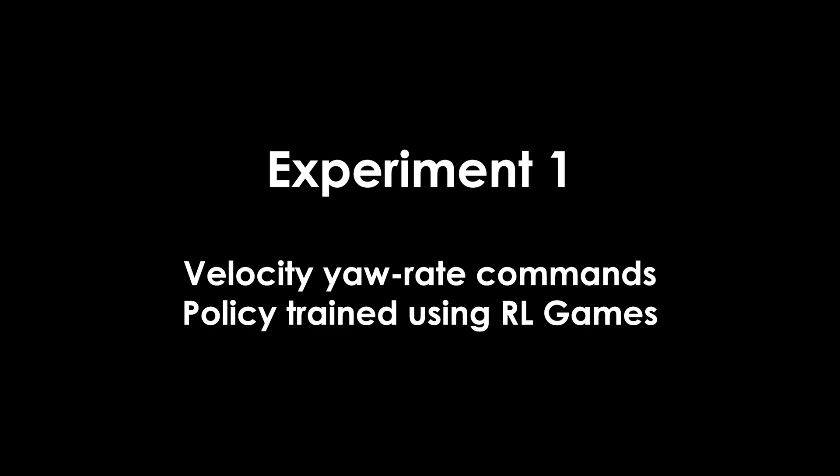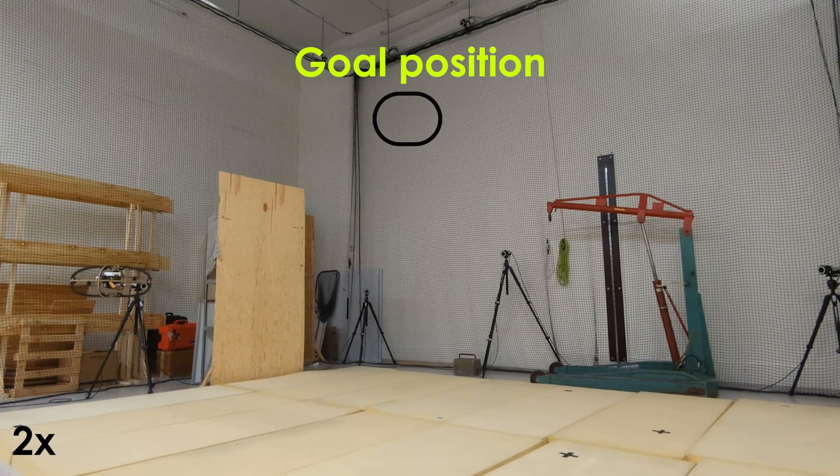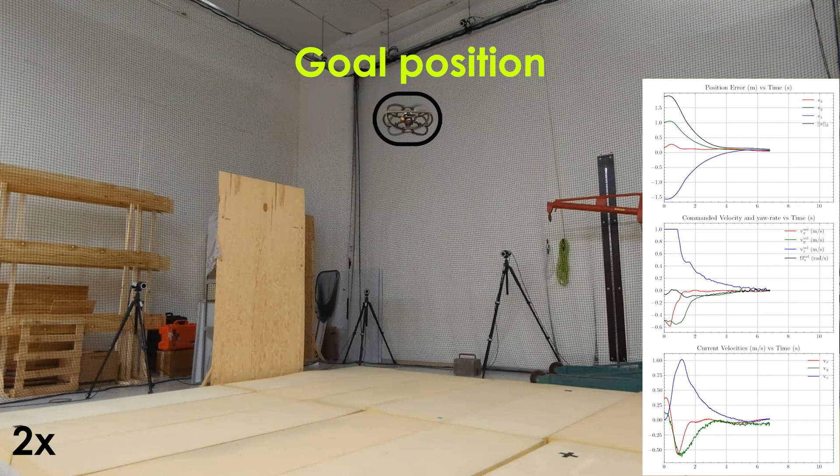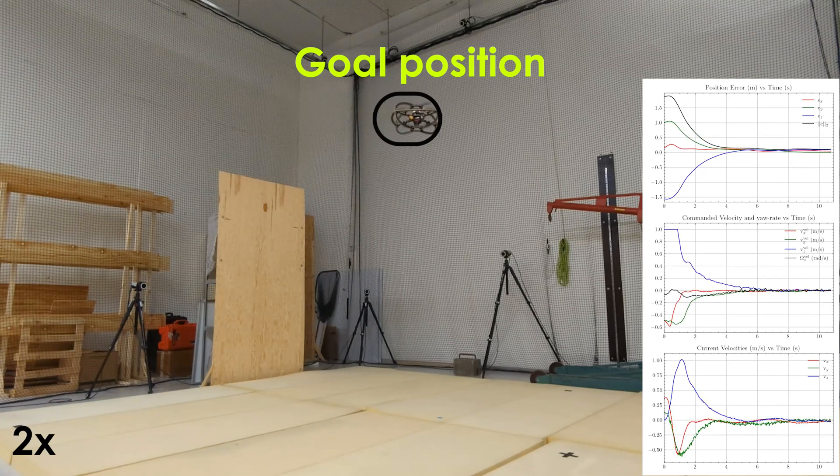We conduct a series of experiments to validate the sim-to-real transfer of trained policies. First, we train a velocity yaw rate control policy for tracking a position setpoint for a quadrotor platform.